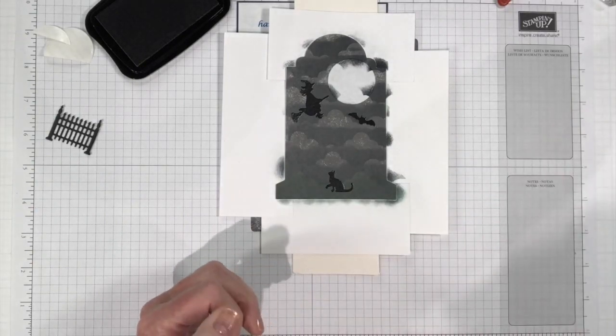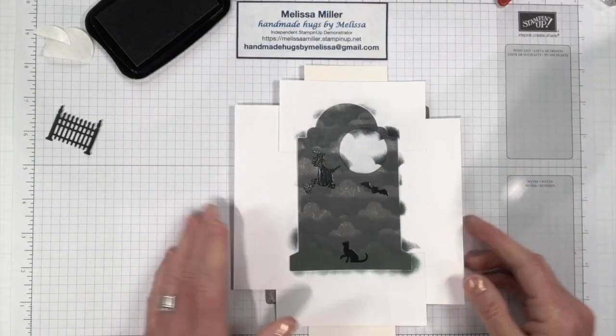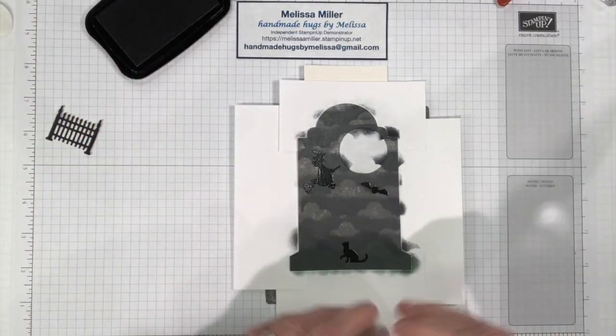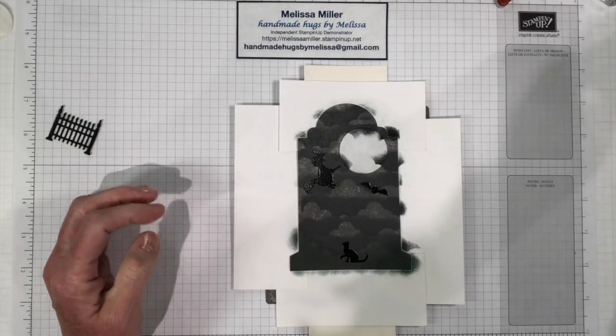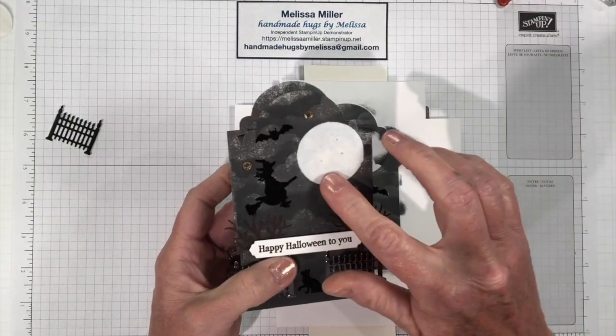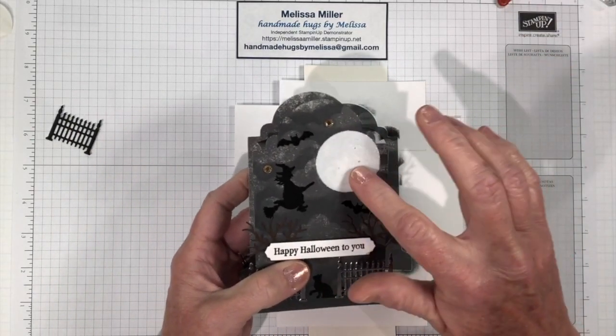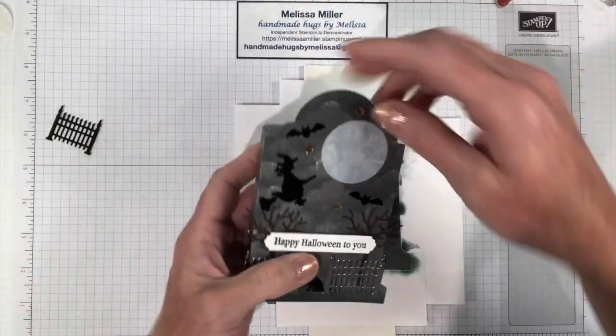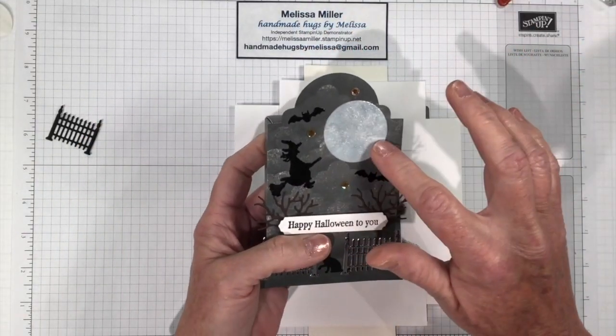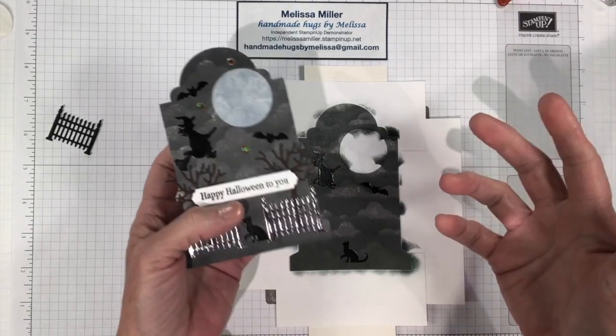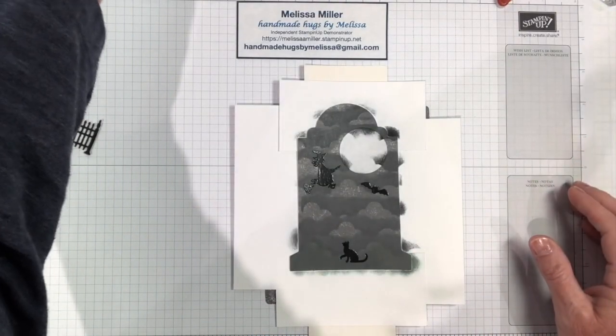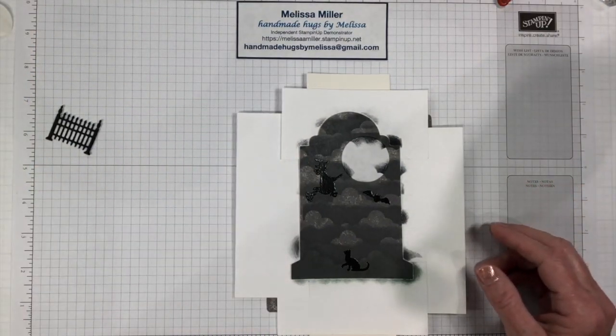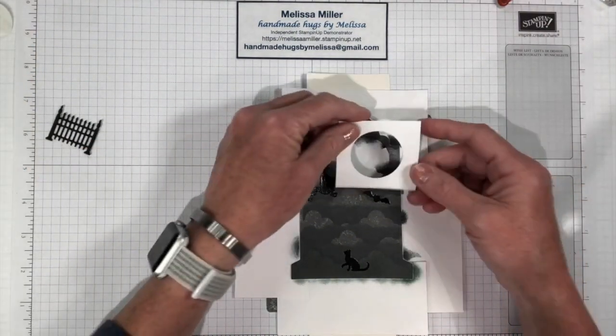And now we are going to heat emboss our moon. What I did here was I tried a couple of different ones. I tried one with white embossing powder and it really stands out. And then I tried one with the clear embossing powder and I liked that better because the moon isn't just solid white. You can see all the craters and everything. So I really liked the clear better.